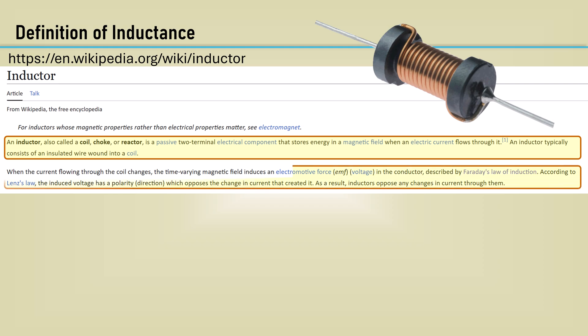When the electric current flowing through the coil changes, the time-varying magnetic field induces an electromotive force in the conductor described by Faraday's law of induction. According to Lenz's law, the induced voltage has a polarity which opposes the change in current that created it. As a result, inductors oppose any changes in electrical current through them.